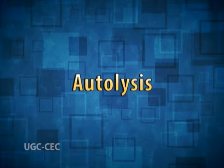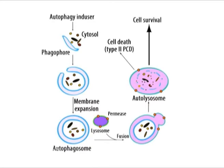Autolysis refers to the digestion of a cell's own components by its lysosomes. In autolysis, the lysosome digests its own cell; hence, autolysis is also called cellular autophagy. In this process, the lysosome ruptures inside its cell and the released enzymes digest and degrade the cell.